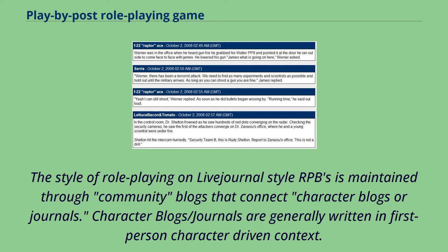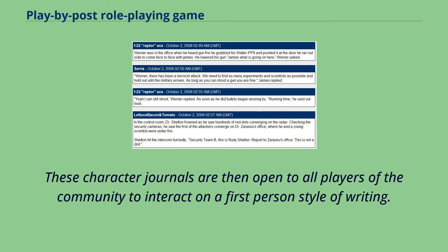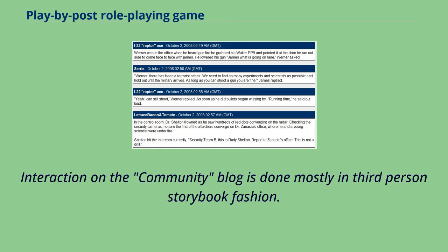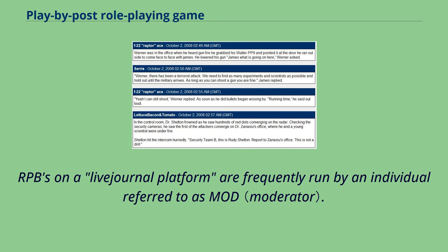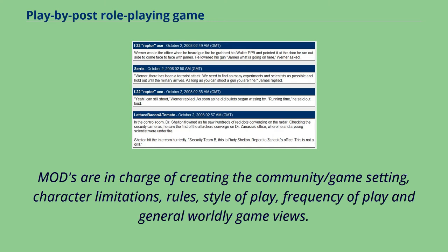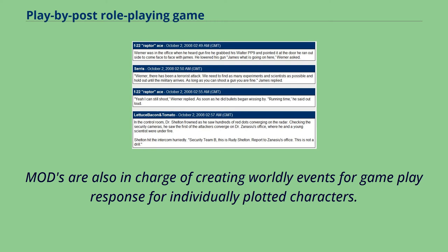The style of role-playing on LiveJournal-style RPBs is maintained through community blogs that connect character blogs or journals. Character blogs and journals are generally written in first-person character-driven context. These character journals are then open to all players of the community to interact on a first-person style of writing. Interaction on the community blog is done mostly in third-person storybook fashion. RPBs on a LiveJournal platform are frequently run by an individual referred to as a mod. Mods are in charge of creating the community and game setting, character limitations, rules, style of play, frequency of play, and general worldly game views. Mods are also in charge of creating worldly events for gameplay response for individually plotted characters.